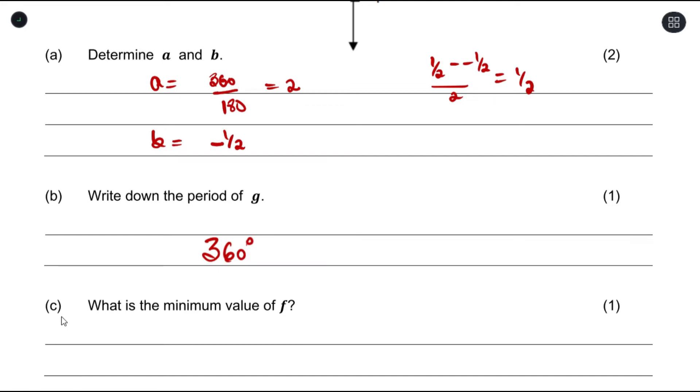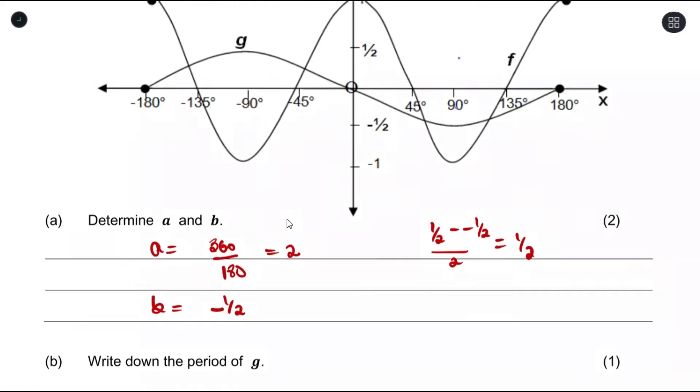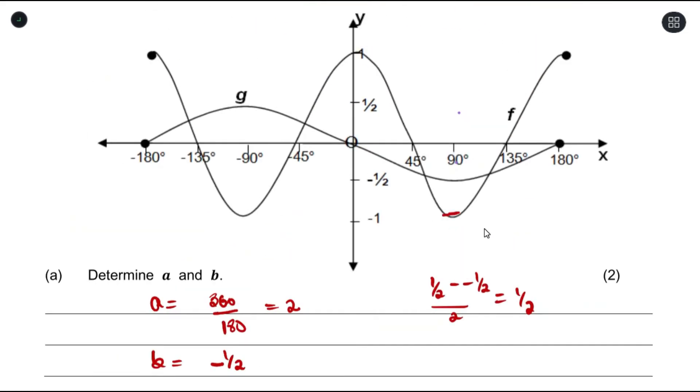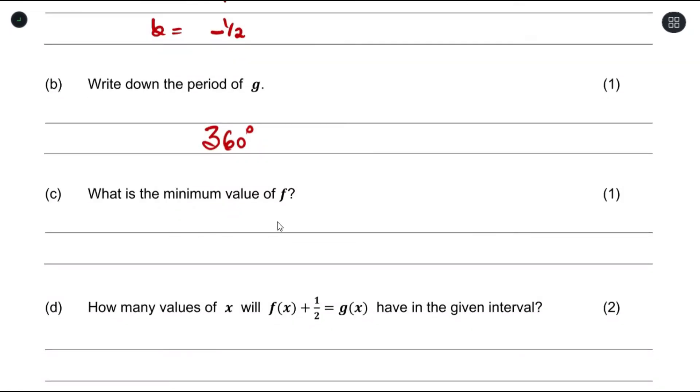For (c) they ask what is the minimum value of f. Minimum value is the lowest possible point, which is negative 1. So the answer here is just negative 1.